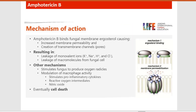Then we have amphotericin B, which is an antifungal antimicrobial agent. Amphotericin B binds to fungal membrane ergosterol, causing increased membrane permeability. It creates transmembrane channels or pores in the fungal membrane, resulting in the leakage of monovalent ions such as K+, Na+, H+, and Cl−, as well as micromolecules from the fungal cell. This leakage eventually leads to cell death.